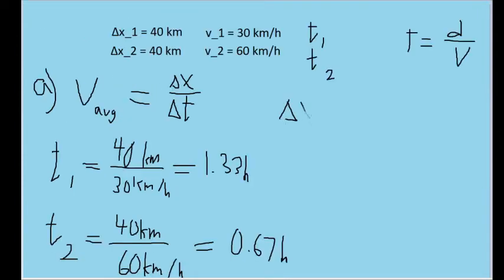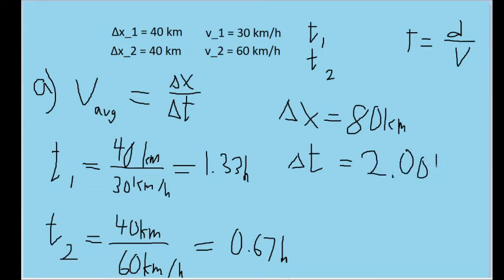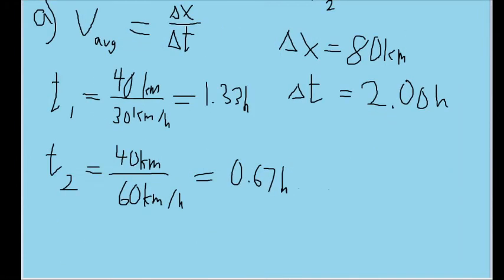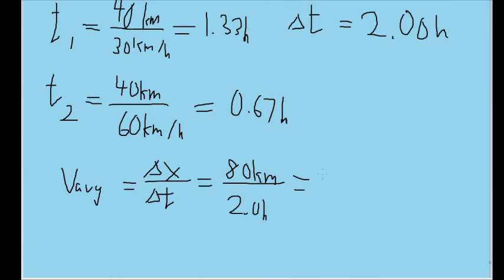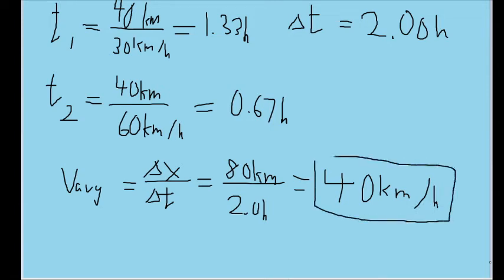Now we know that the change in position delta x is equal to 80 kilometers. We can also figure out that the change in time, delta t, is equal to the sum of t sub 1 and t sub 2 — so 1.33 hours plus 0.67 hours — which equals 2.00 hours. The average velocity is therefore 80 kilometers divided by 2 hours, which is 40 kilometers per hour. That is the average velocity throughout this automobile's motion.